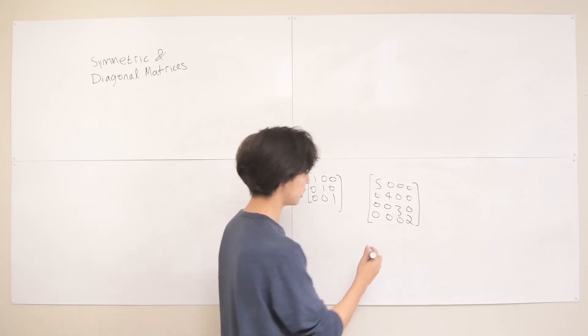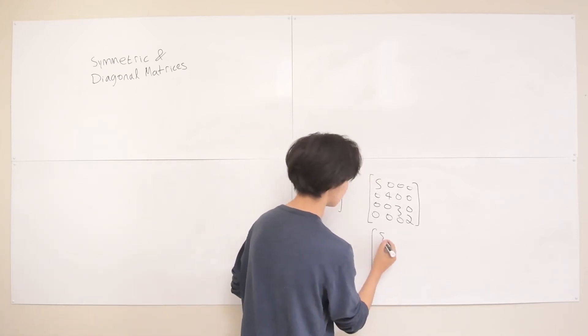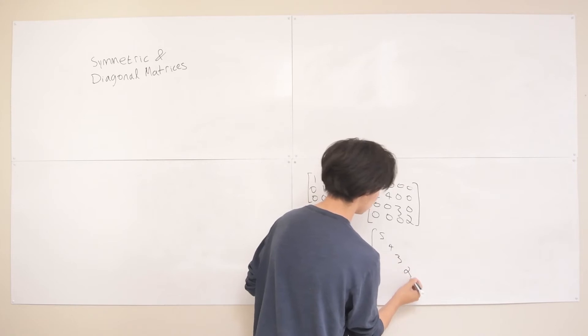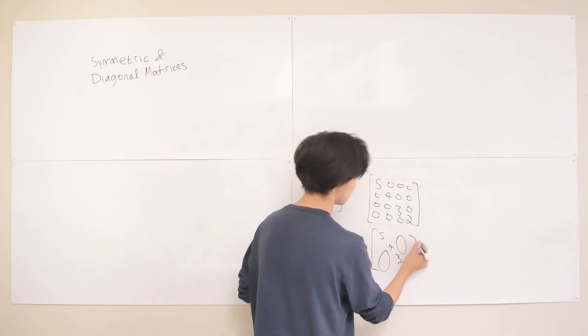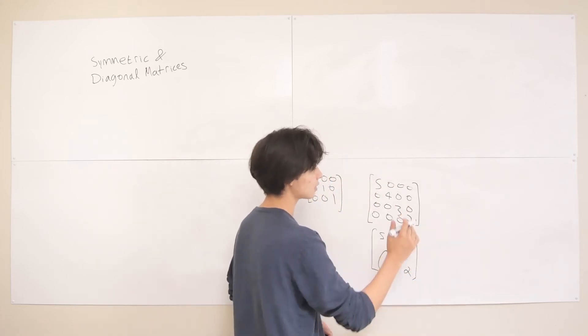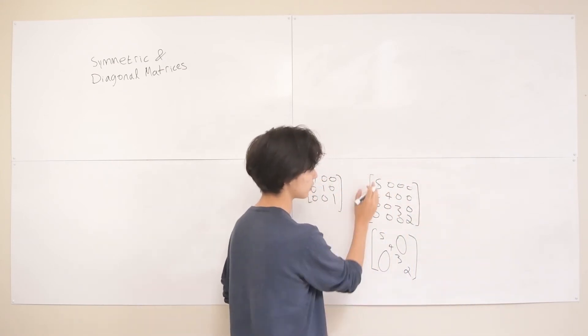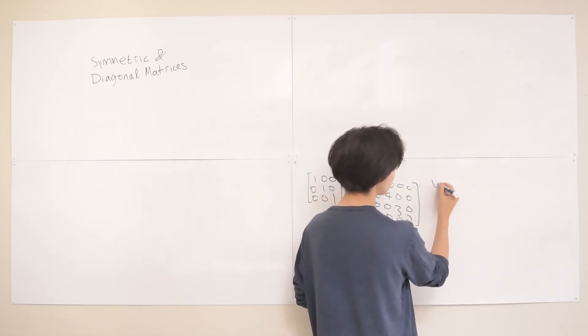So often we just cheat and either we write, and you'll see me do this a lot, you just write two big 0s on the end here. And then in text, often we say, to represent a diagonal matrix, for example, this one, we first make a vector.